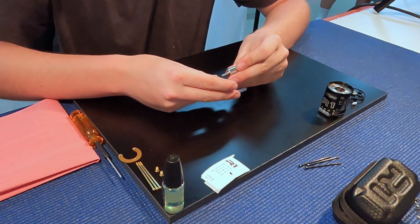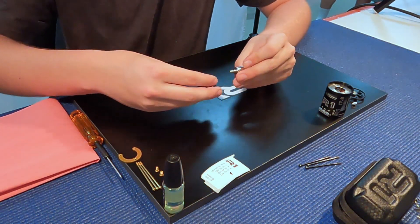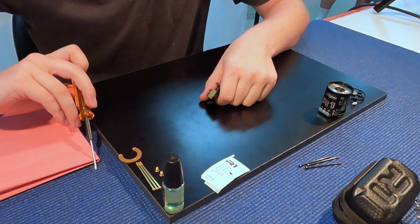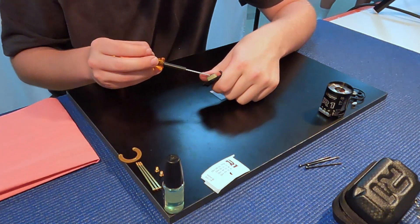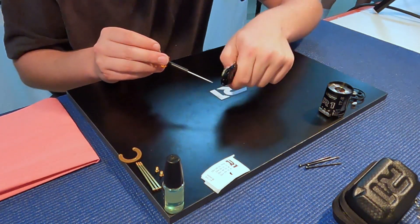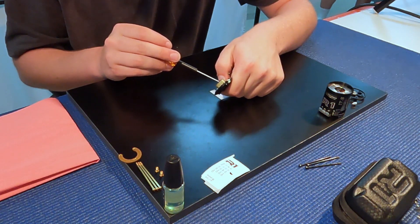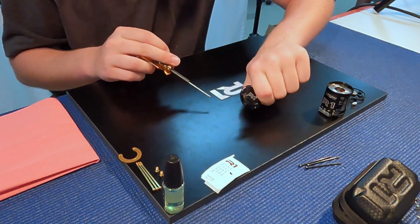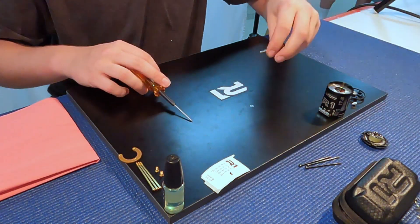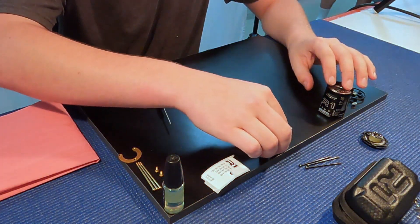And then also on the back side of this, there are some shims. Looks like a 0.1 shim is in there. So it's a little difficult to get these out. There we go, so now we have everything out.